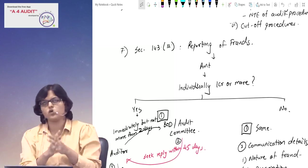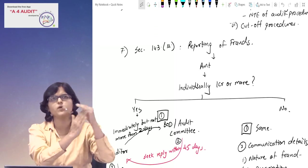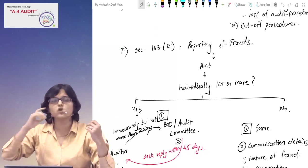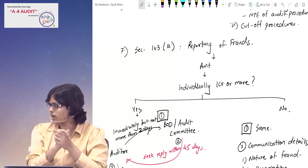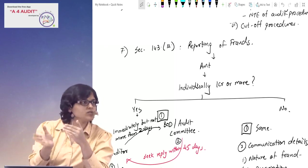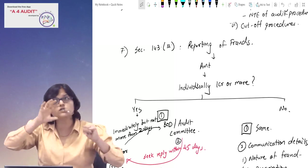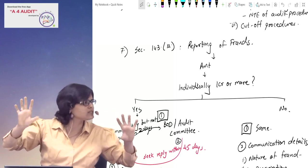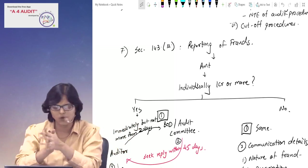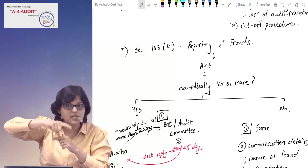Next point - we have said 143.12 reporting of frauds by the auditor. It has to be reported to CG. Less than one crore - just board or audit committee. Individual amount noticed and reported.